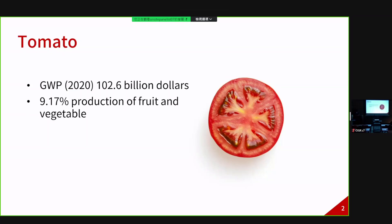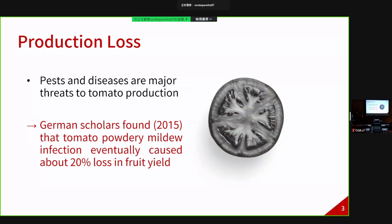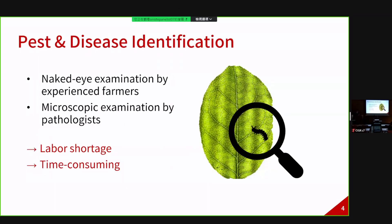Tomato is an important crop worldwide. According to FAO statistics, tomato production accounts for 10% of the vegetable and fruit yields. However, tomato production suffers losses due to pathogen disease. For example, according to a German study, tomato powdery mildew infection, which is a tomato disease, caused about 20% loss in fruit yields. Therefore, we need to prevent this, and identification is the first step to prevent production loss.